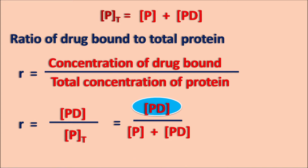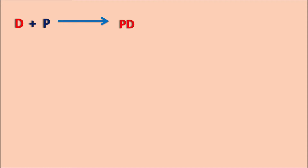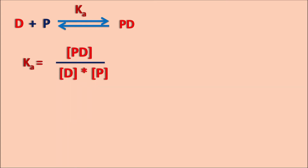How can we get the Pd value? Pd indicates whatever protein is occupied with the drug. This Pd value can be obtained from the rate equation of the protein-drug interaction. The drug interacts with the protein to give the protein-drug complex, given by rate constant Ka, and it can also undergo the reversible reaction. Ka equals the concentration of the products by the concentration of the reactants, which is Pd divided by D times P. From this we can get Pd: rearranging, Pd equals Ka times P times D.